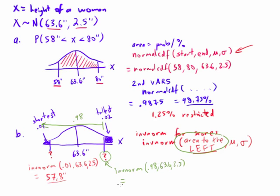And that'll give us what we're looking for. So back to 2nd VARs, inverse norm, 98, 63.6, 2.5, and we come up with about 68.7 inches.